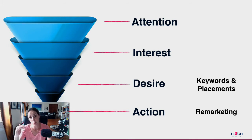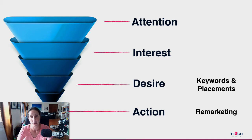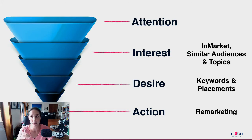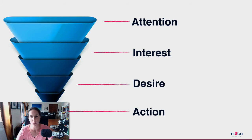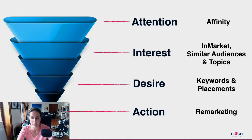Further up the funnel where people have desire but aren't quite sure who they're going to buy from, this is where you would do keyword targeting and placement targeting — these are my two favorite methods of targeting on YouTube ads. For people who have somewhat of an interest, that might be in-market audiences, similar audiences, and topic targeting. And affinity audiences I find are usually quite top-of-funnel, and often I never even end up using those.